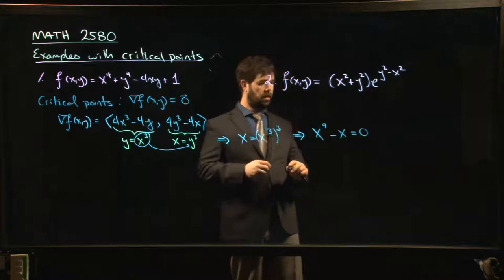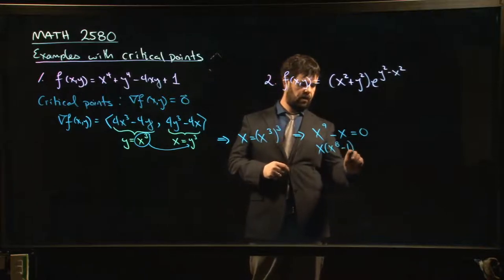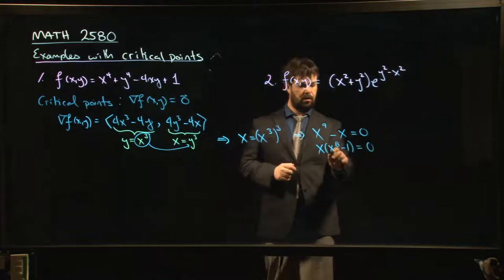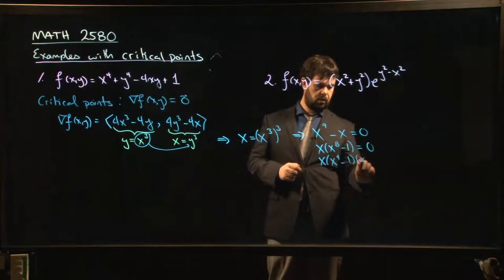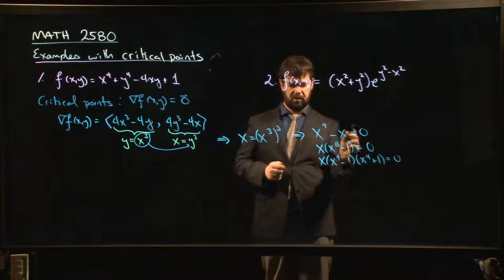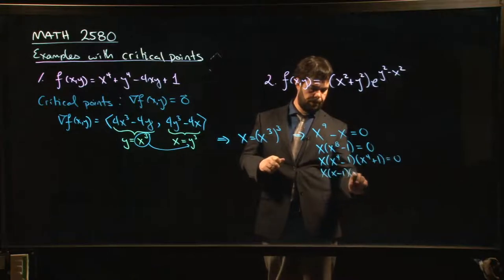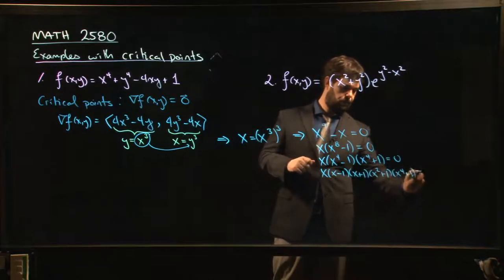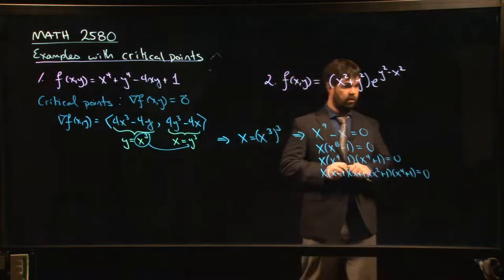Factor out an x: we have x times (x⁸ - 1) equals zero. Well, this factors as (x⁴ - 1) times (x⁴ + 1). I mean probably you already know the answer is going to be plus or minus one, but let's finish it. Alright, so that's a lot of work to get to the result.